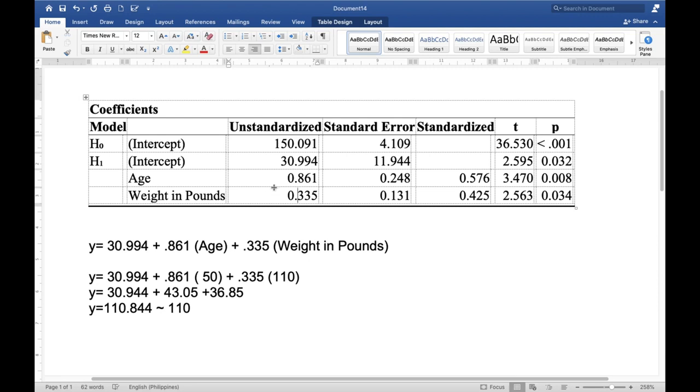So for age, an age increase is an increase in the systolic blood pressure reading by 0.861. Again, an age increase is an increase in the systolic blood pressure reading by 0.861 holding weight in pounds constant.